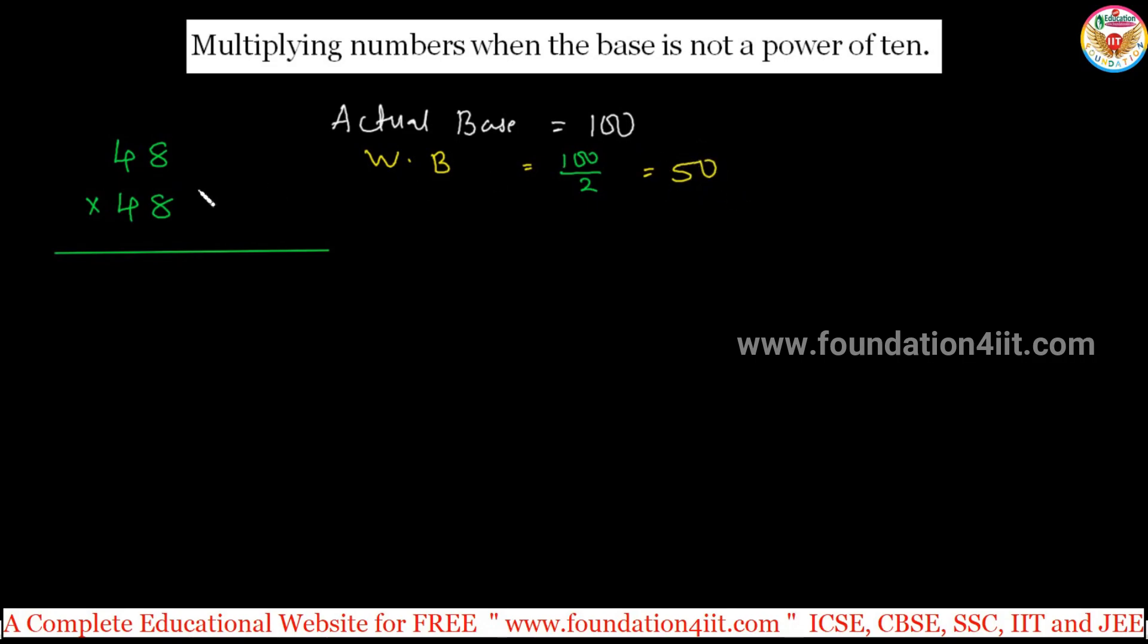Now, with 50 as the base, we will start the problem. Same base method. We'll treat 50 as the main base and start. 48 is 2 less, 2 less compared to 50. And this also is 2 less. Keep in mind we have to do actual base is 100, but working base is 50.